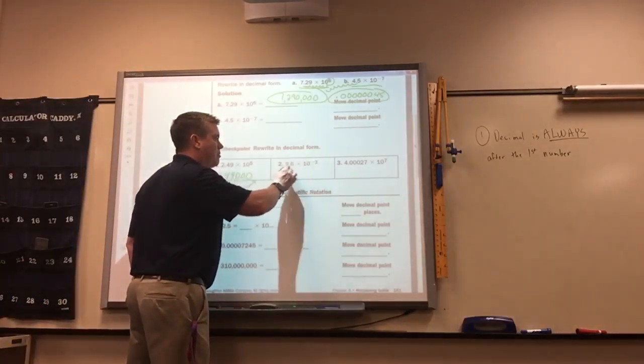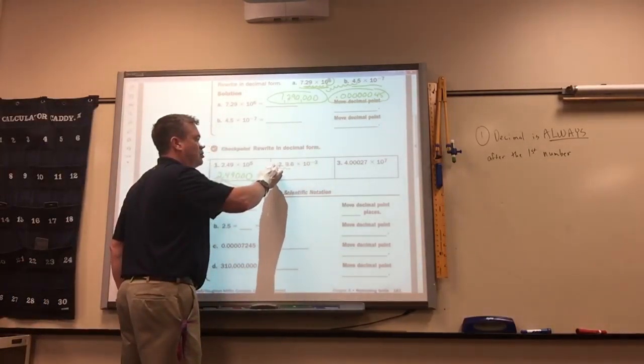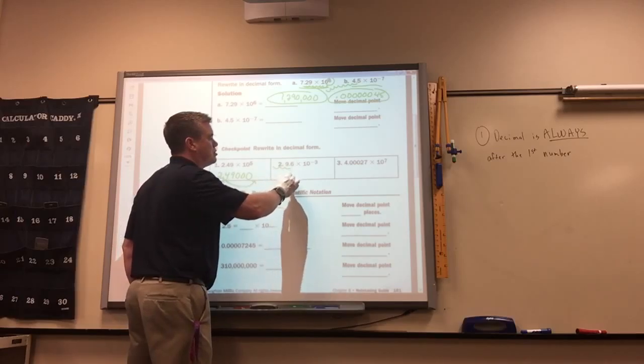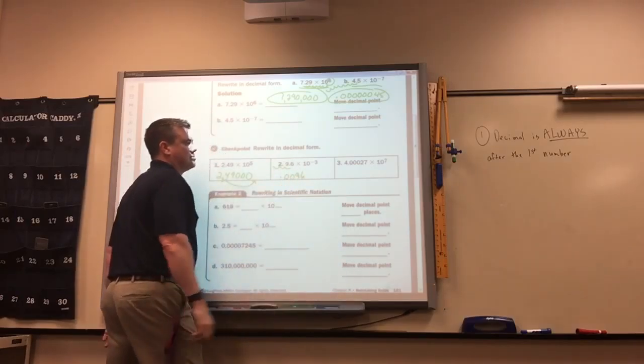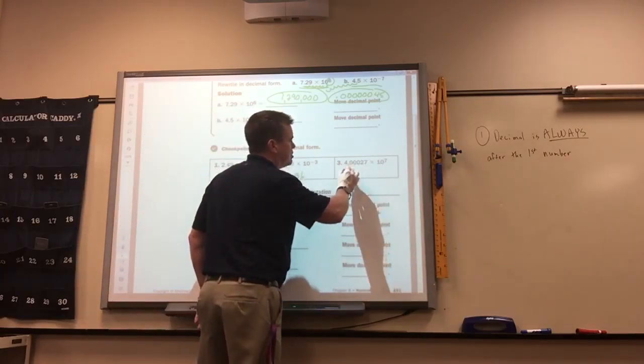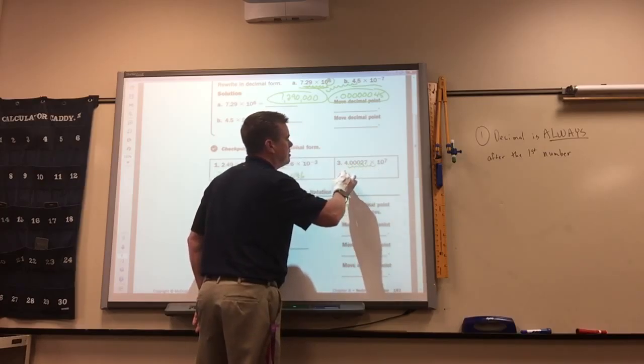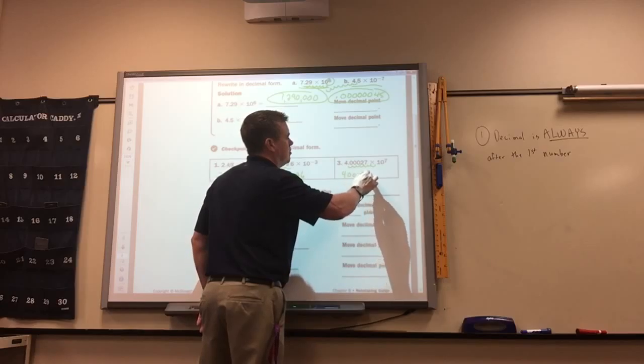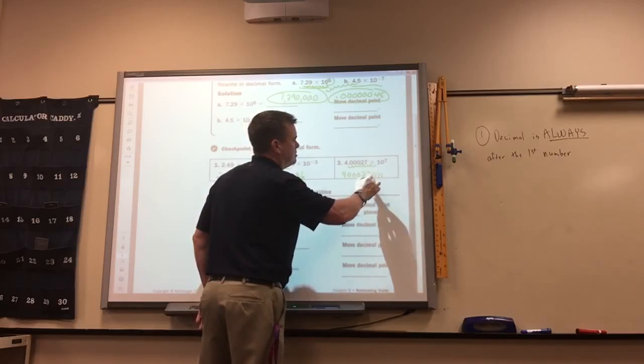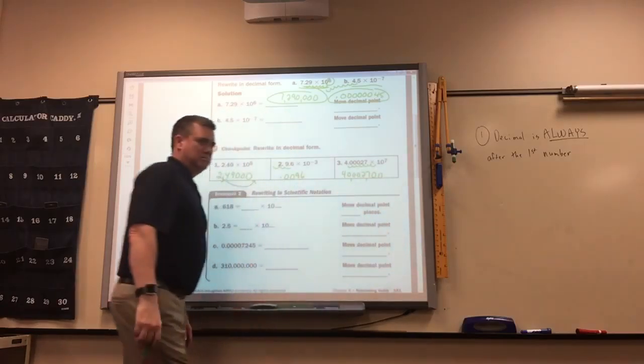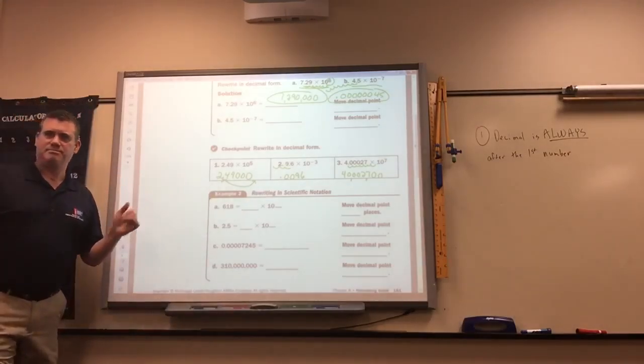So this one, it would move three spots to the left. One, two, three, such as .0096. It would move seven spots. One, two, three, four, five, six, seven. So I'd have to add two more zeros. You guys remember doing this?